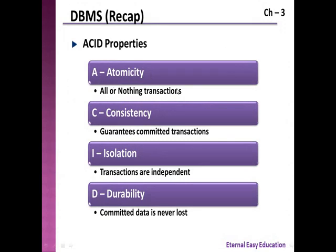Let's recap: A stands for Atomicity — all or nothing transaction. C stands for Consistency — guarantees committed transactions; if all transactions run concurrently, the system manages them one by one to ensure successful completion. I stands for Isolation — transactions are independent, and because of isolation, consistency is done efficiently in DBMS. D stands for Durability — committed data is never lost; once an account is debited, it should remain debited permanently and must not be affected by any system failures.